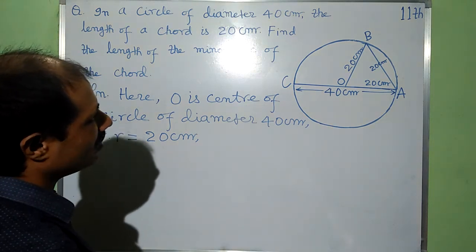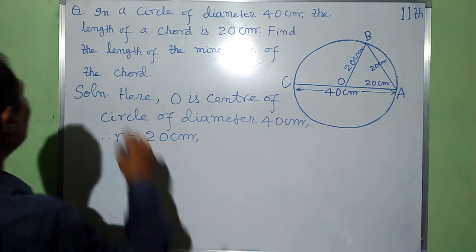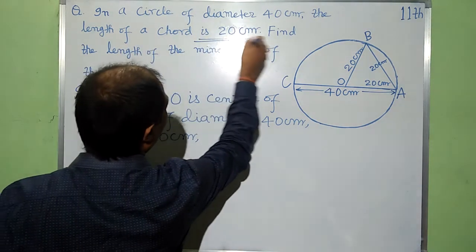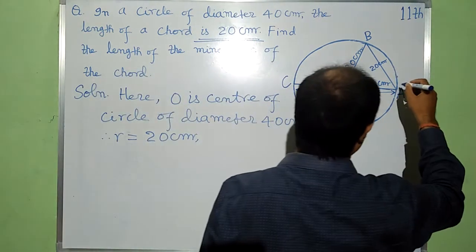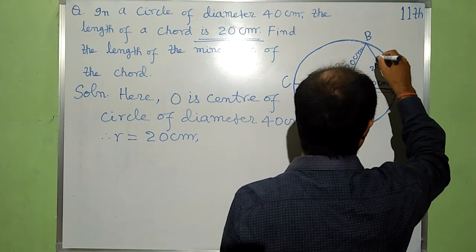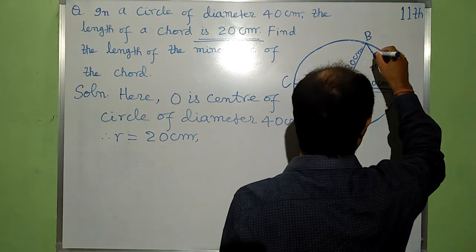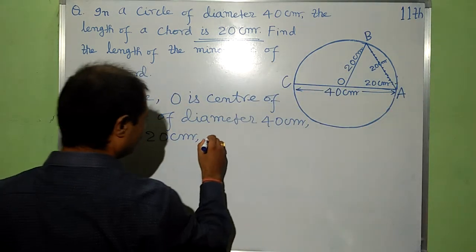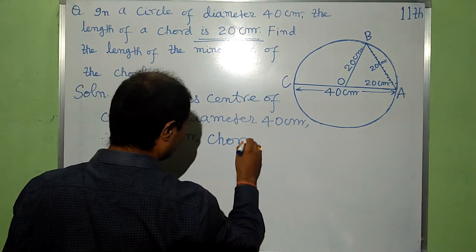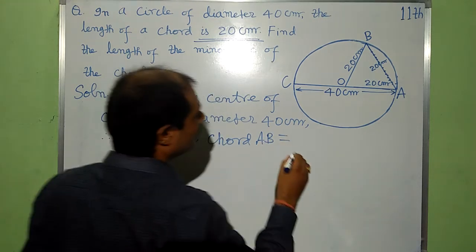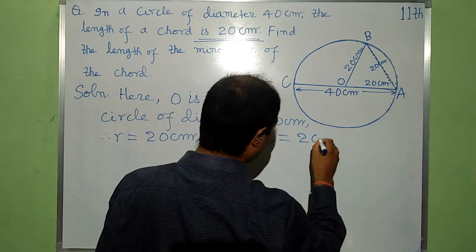And chord, one chord is given. The length of a chord is 20 cm. Chord AB, this is chord. Its length is given. Chord AB is equal to 20 cm.